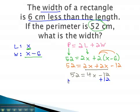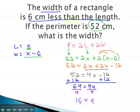Adding 12 to both sides gives us 64 equals 4x. Finally, dividing both sides by 4 will give us x equals 16.